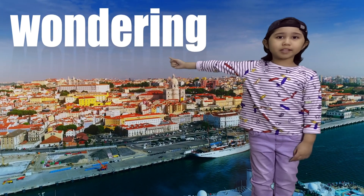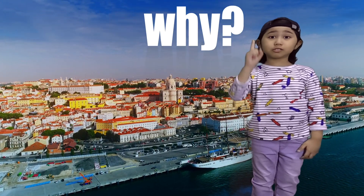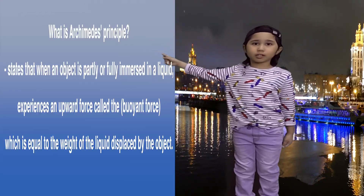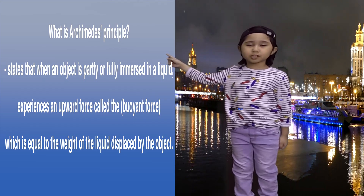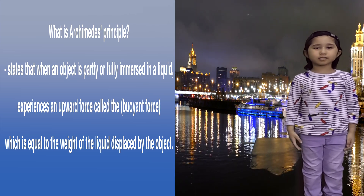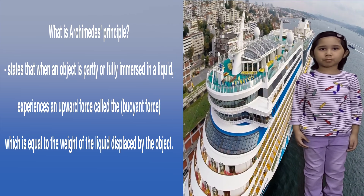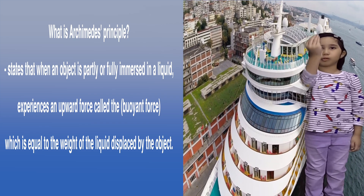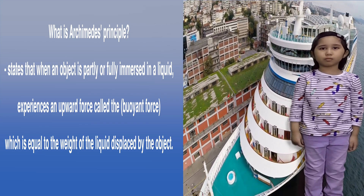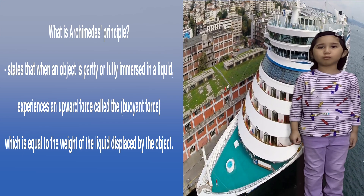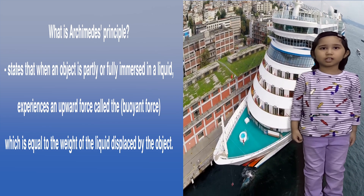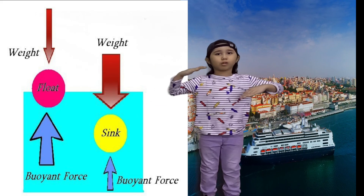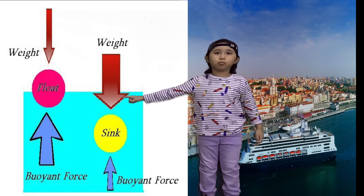Are you wondering why boats and ships are floating? So let's try to find out why. Ships are floating because of what we call the Archimedes Principle. The Archimedes Principle states that when an object is partly or fully immersed in a liquid, it experiences an upward force called buoyant force, which is equal to the weight of the liquid displaced by the object. When the weight and the buoyant force are equal, the object will float.